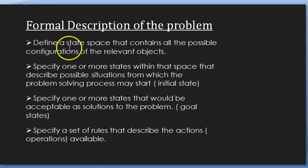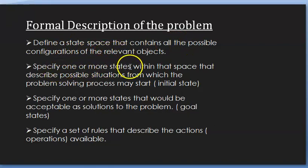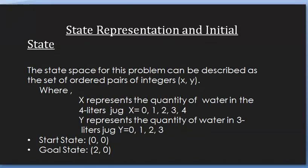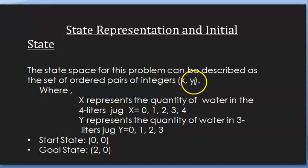The formal description of the problem requires us to define the state space that contains all possible configurations. Then we have to specify one or more states within that state space which will be called the initial state. Then we have to define the goal state and define the set of rules that describe the actions or operations to be performed in order to reach the solution. The state space will describe any state as (x, y) where x stands for the 4 liter jug and y stands for the 3 liter jug.